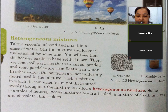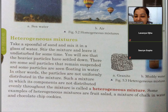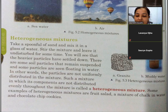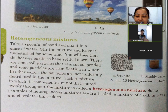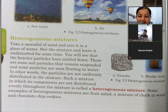Toh heterogeneous mein — jab hum do particles ya do cheezon ko mix karte hain, water mein kisi cheez ko mix kiya, toh woh puri tarah se ghul nahi jaata. Jaise sand ko paani mein daalo toh sand heavy hota hai, neeche chala jaata hai. Soil particles float karte hain ya upar rehte hain. Yeh components puri tarah mix nahi hote — isse heterogeneous mixture kehte hain. Jaise fruit salad, chocolate chip cookies.